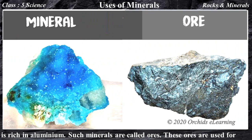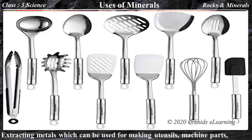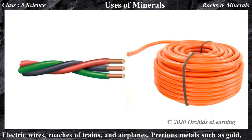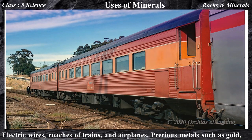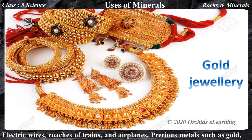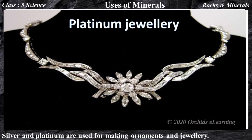These ores are used for extracting metals, which can be used for making utensils, machine parts, electric wires, coaches of trains, and airplanes. Precious metals such as gold, silver, and platinum are used for making ornaments and jewelry.